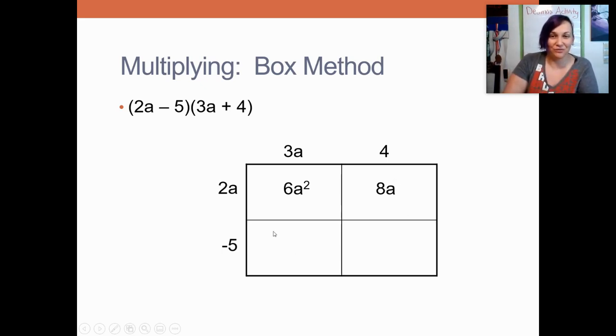Jumping down to my second row, I'm going to multiply the negative 5 and the 3a. So negative 5 times 3 is negative 15. And then finally, for my last box, I'm going to multiply the negative 5 times the 4. And negative 5 times 4 is negative 20.